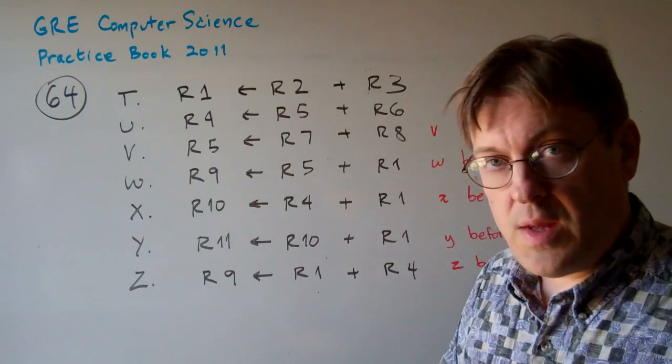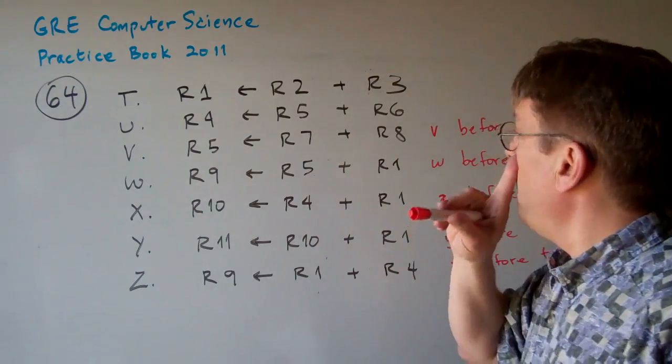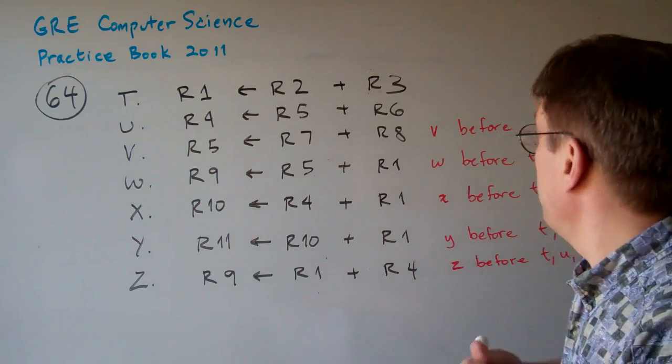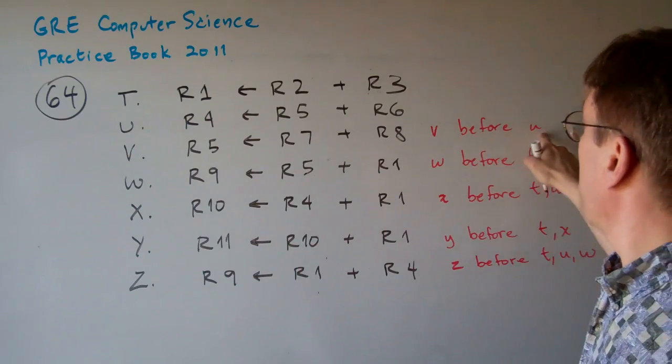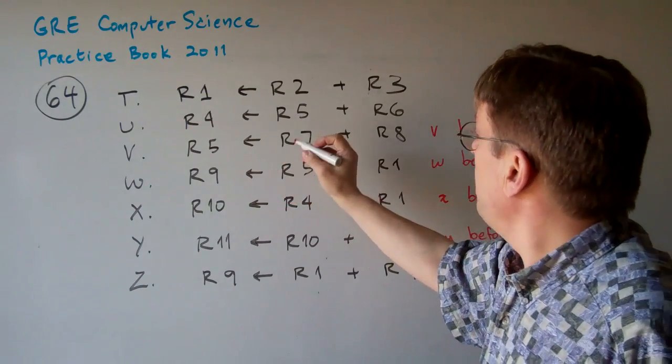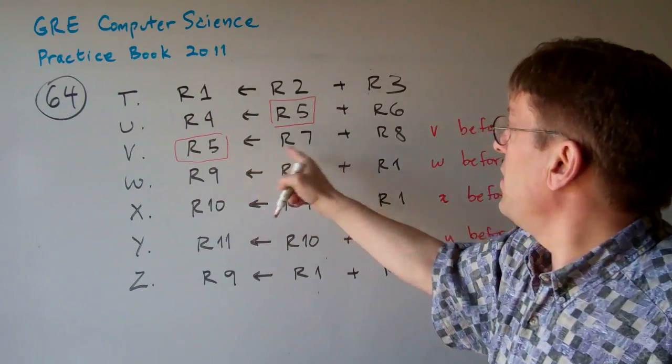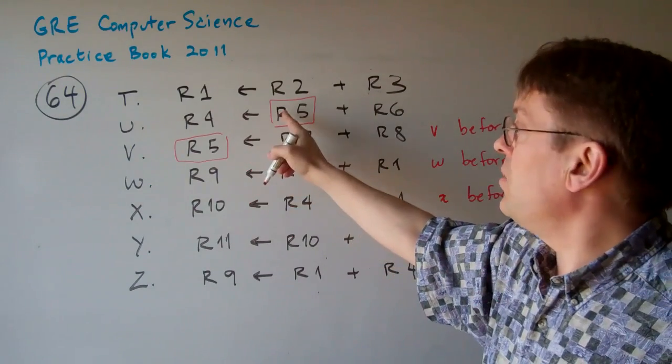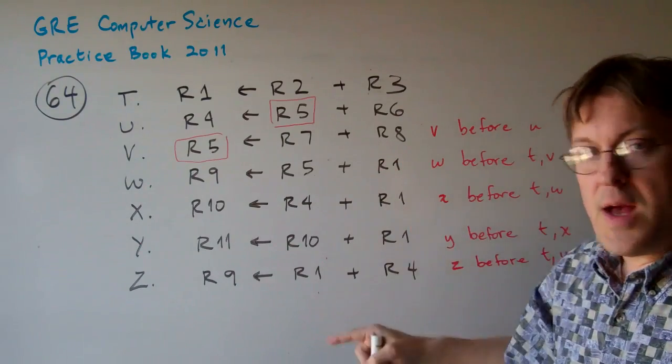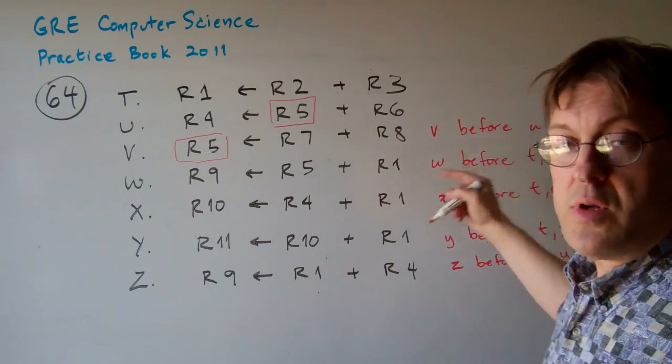I think the easiest way of doing this problem is to take a look at these steps and ask yourself what would cause a problem. For example, here if step V gets executed before step U, then this R5 is going to be wrong. Because here it's outputting an R5 and U would be using the wrong R5. So, we have to check all the answers to make sure that V is not before U. Because if V is before U, there's a problem.